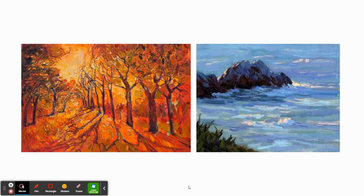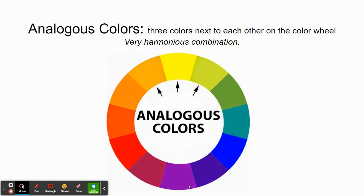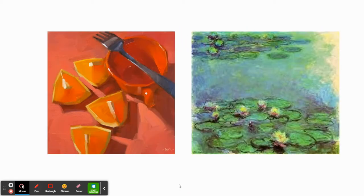Here are two examples of compositions using all warm colors and all cool colors — they have completely different feelings based on color choices. Analogous colors are three colors next to each other on the color wheel. These combinations tend to be very harmonious and feel really good together. When you combine three colors next to each other on the color wheel, you get a very pleasing, satisfying color combination. Here are two examples: red, orange, and yellow-orange; and green, yellow-green, and blue-green. They're easy to look at and very pleasing, with a real sense of harmony.